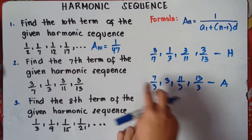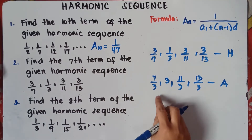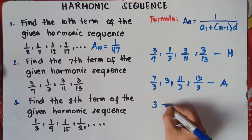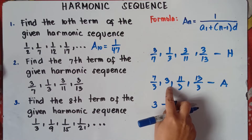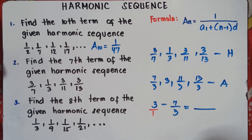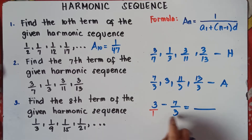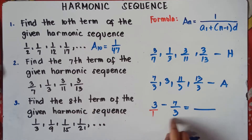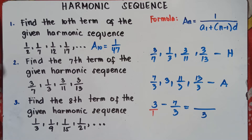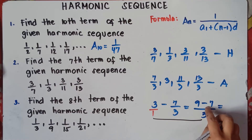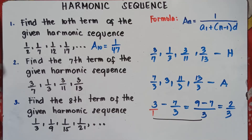We will use this arithmetic sequence to find the 7th term. Get the common difference first. Second term minus first term: 3 minus 7 over 3. Understood that whole number 3 has a denominator of 1. If the denominators are not the same, find the LCD, which is 3. So 3 divided by 1 is 3, times 3 is 9, minus — 3 divided by 3 is 1, times 7 is 7. So 9 minus 7 is 2, over 3. The common difference is 2 thirds.